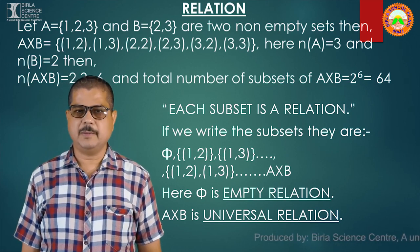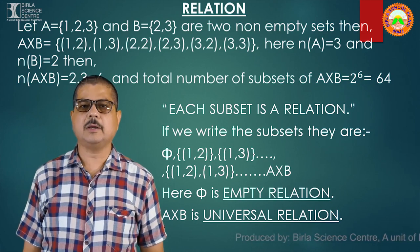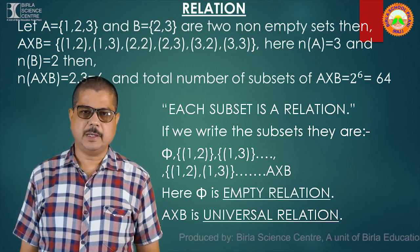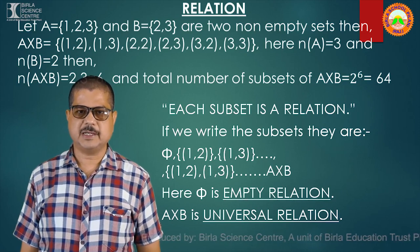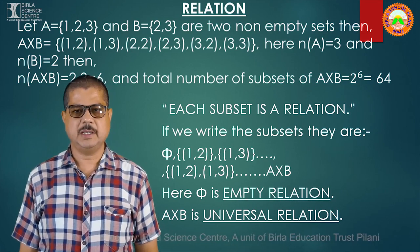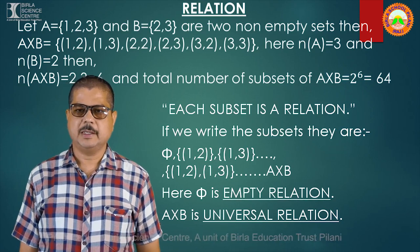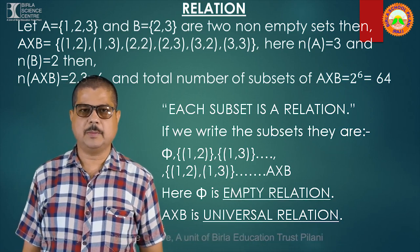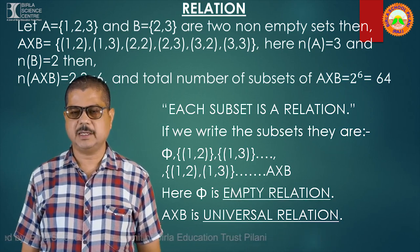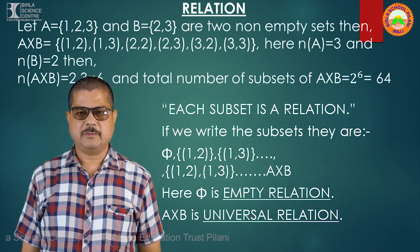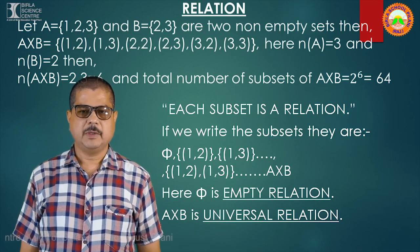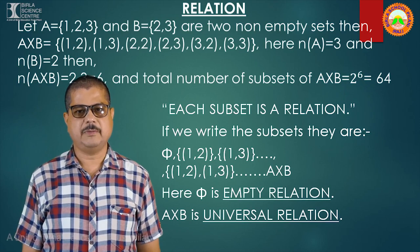Then the number of elements in A×B are 6. And if we form the total subsets of this Cartesian product A×B, which contains 6 elements, then the total number of subsets will be 2 to the power 6, that is 64. Therefore, if we write the subsets, the first subset will be the empty set.